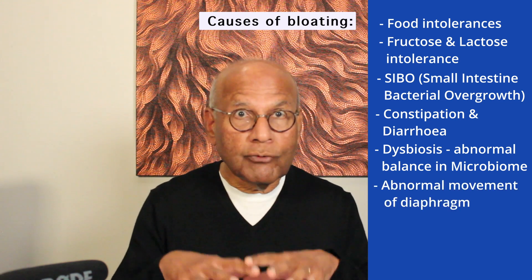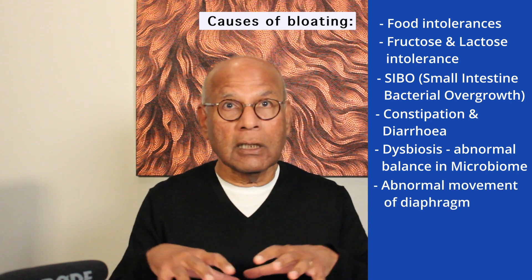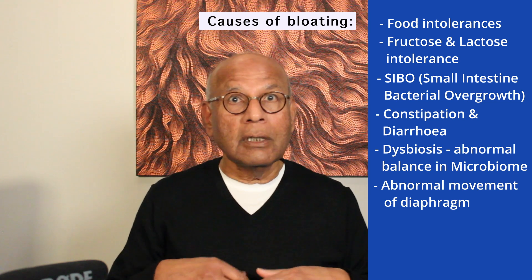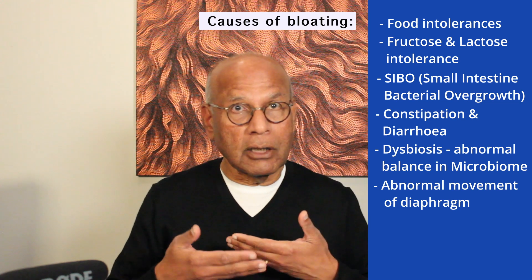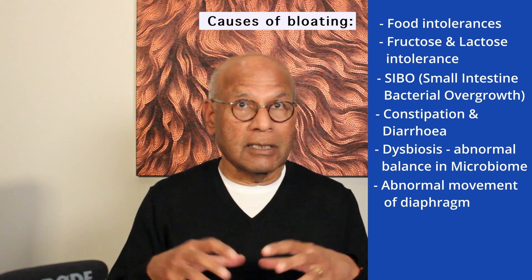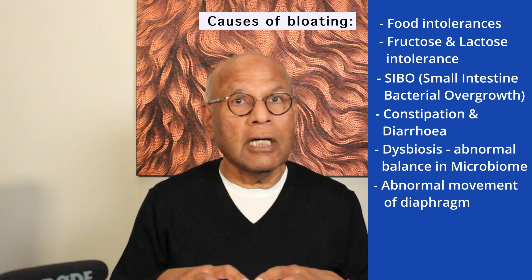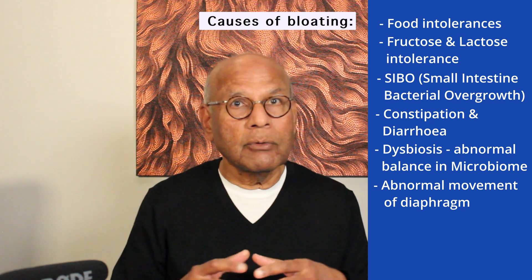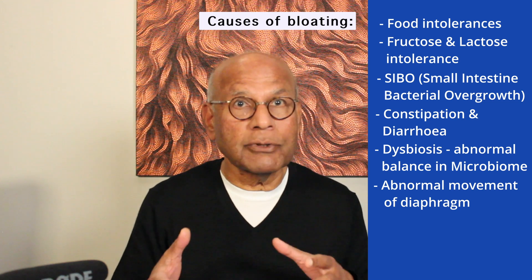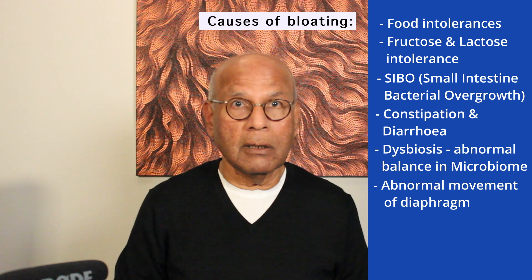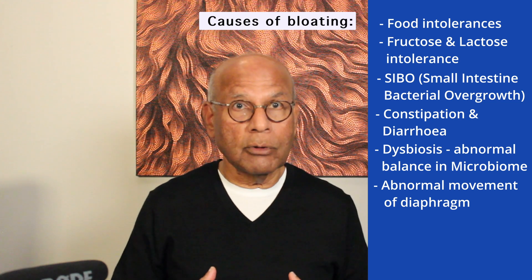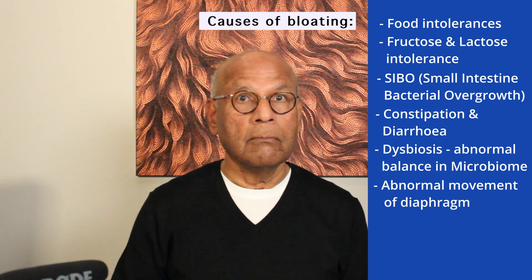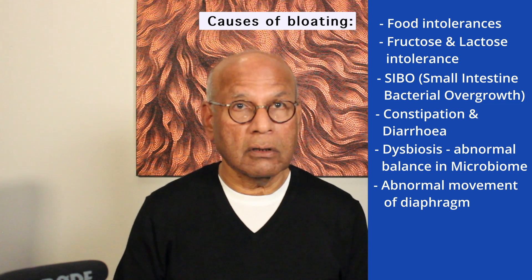Another cause is abnormal movement of the diaphragm — a strange mechanism. Normally with a meal, the diaphragm, which is a dome-shaped muscle separating the chest from the abdomen — that is, the heart and lungs from the gut — usually moves up to make way for food coming into the stomach. In some people with distension, the diaphragm works in the opposite way, moving down with the meal towards the gut. This action causes the abdomen to push outwards, causing it to distend. The reason why this occurs is not yet understood.